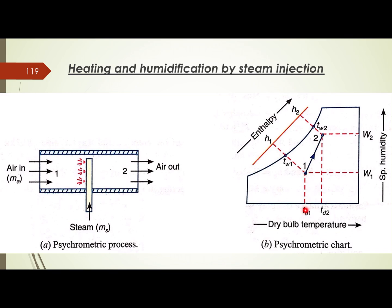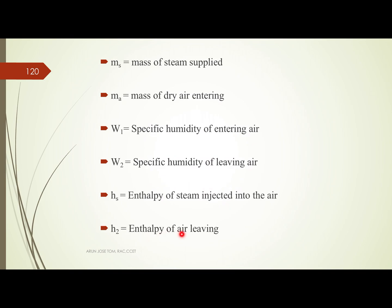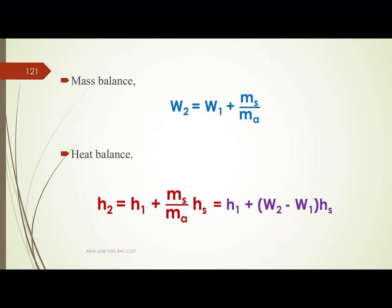State 1 has dry bulb temperature TD1 and state 2 has TD2. State 1 has specific humidity W1, and state 2 has W2. State 1 has enthalpy H1 and state 2 has H2. MS is the mass of steam supplied, MA is the mass of dry air, W1 is the specific humidity of entering air, W2 is the specific humidity of leaving air, and HS is the enthalpy of steam injected into the air.